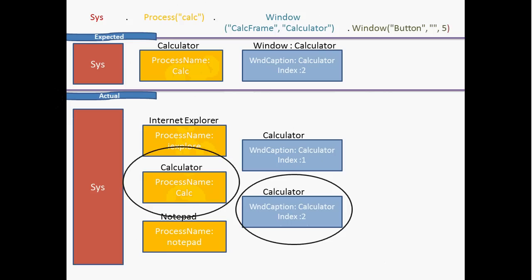Once TestComplete identifies this as the expected window, it captures the handle to the window. Every window has a handle. Once TestComplete captures that handle, it can then access the child objects of that window.